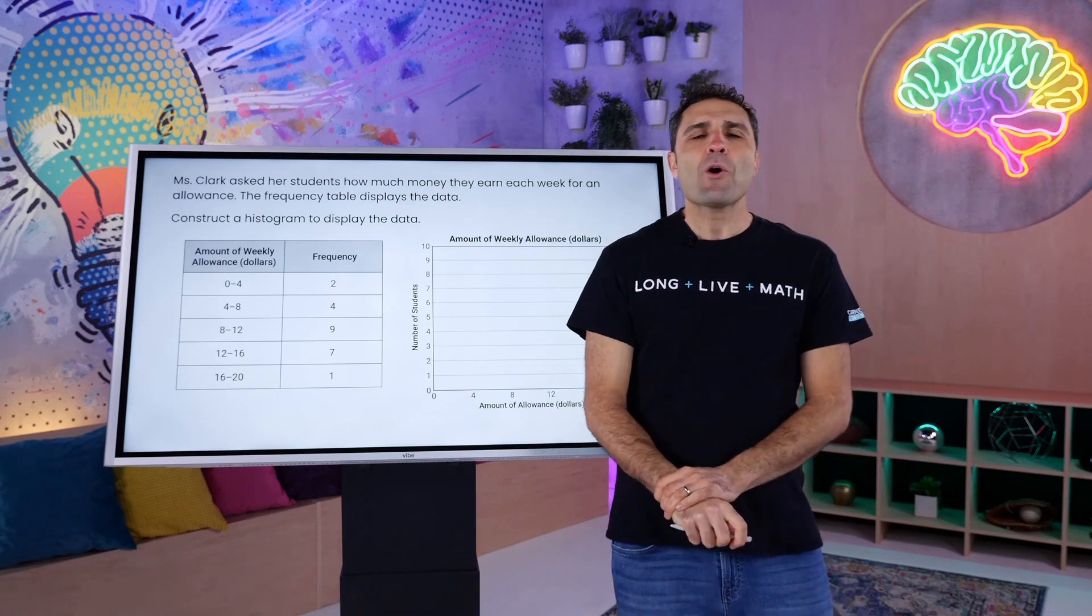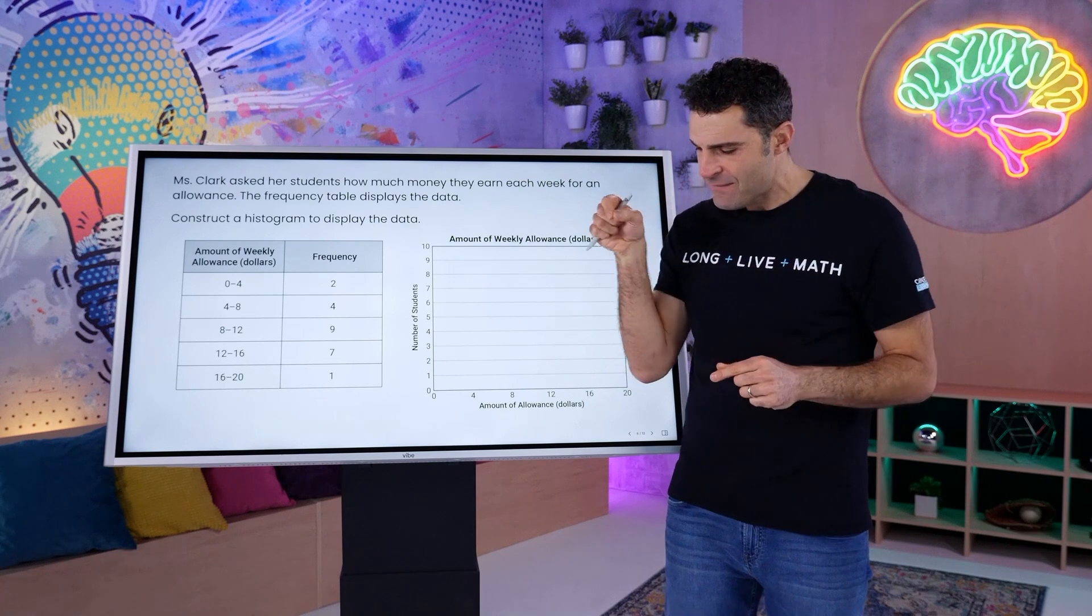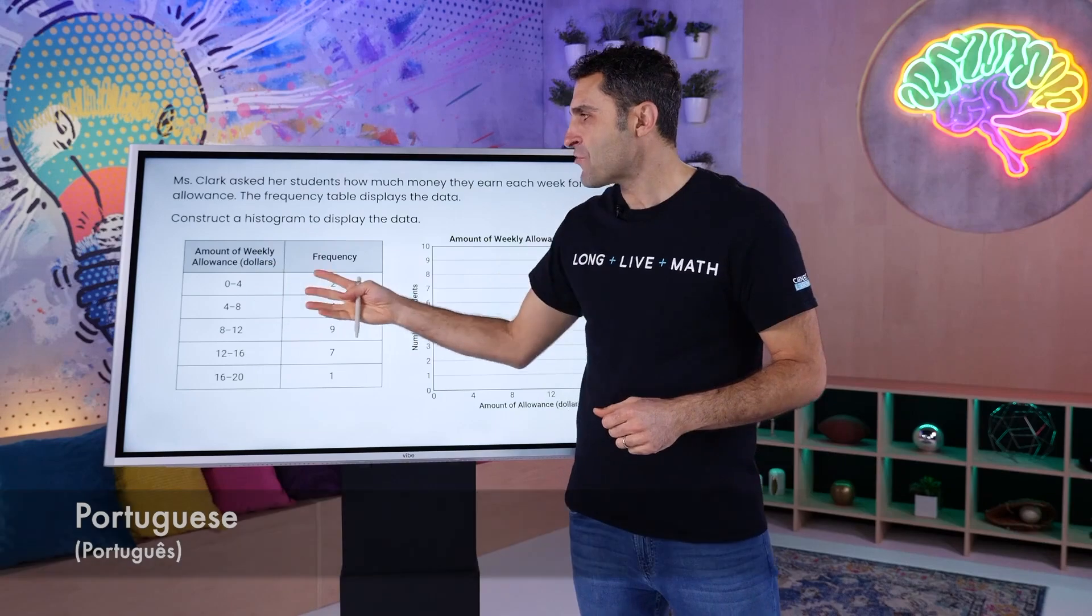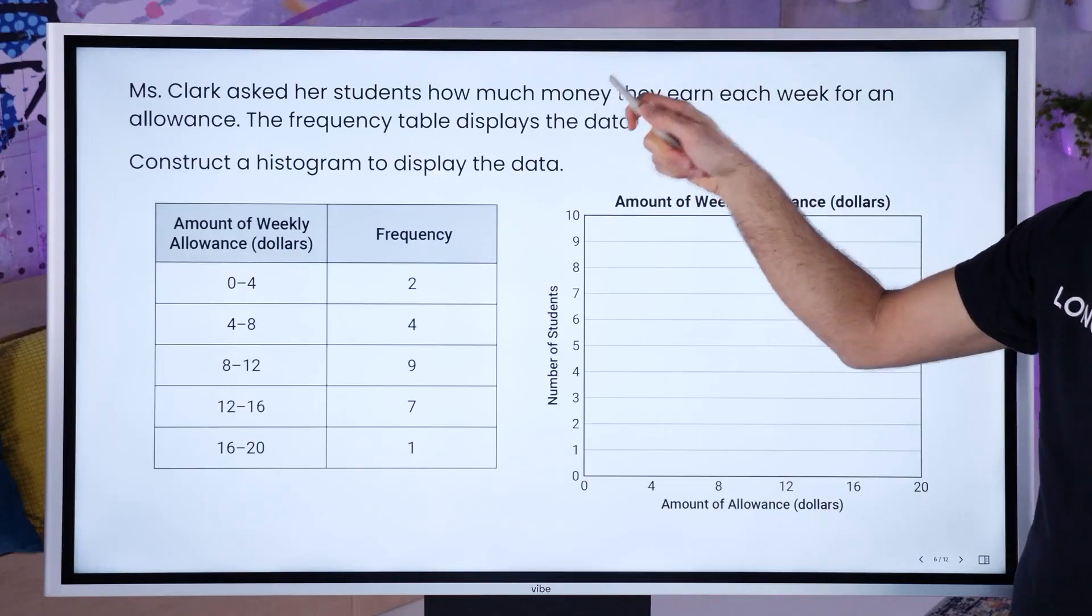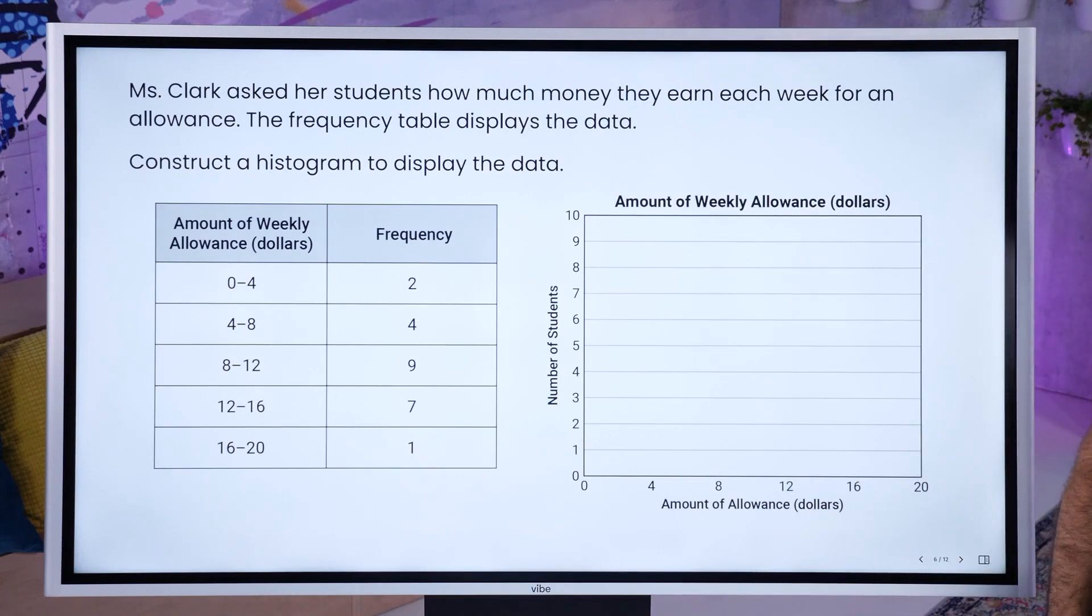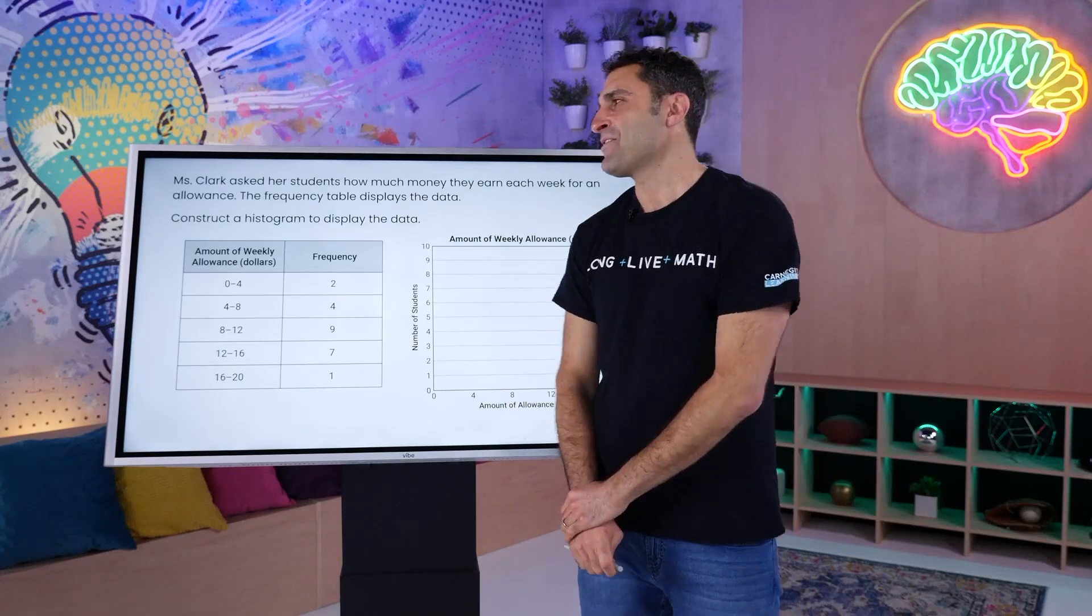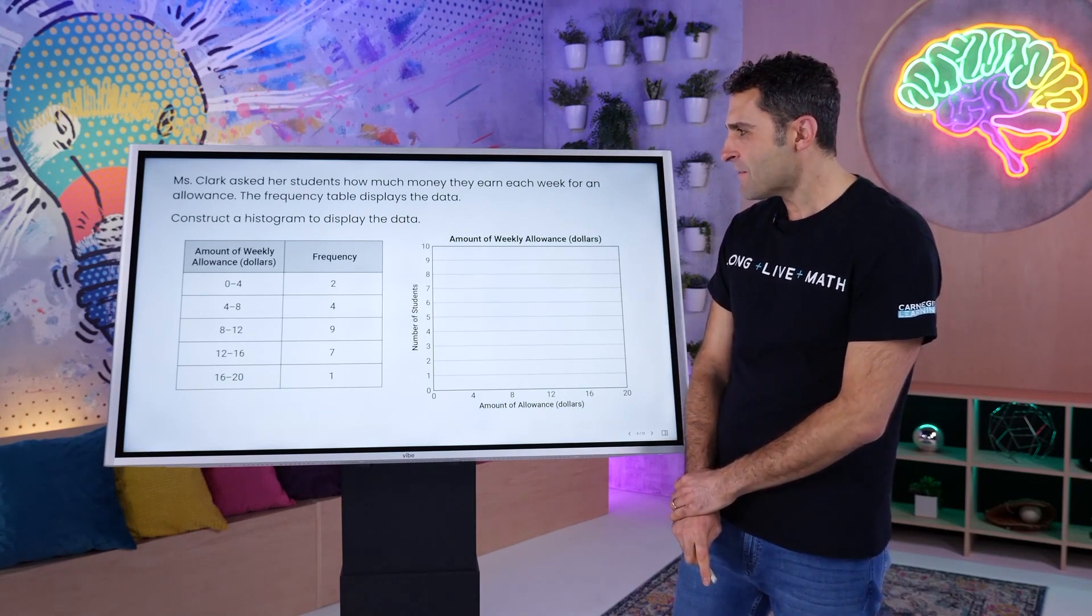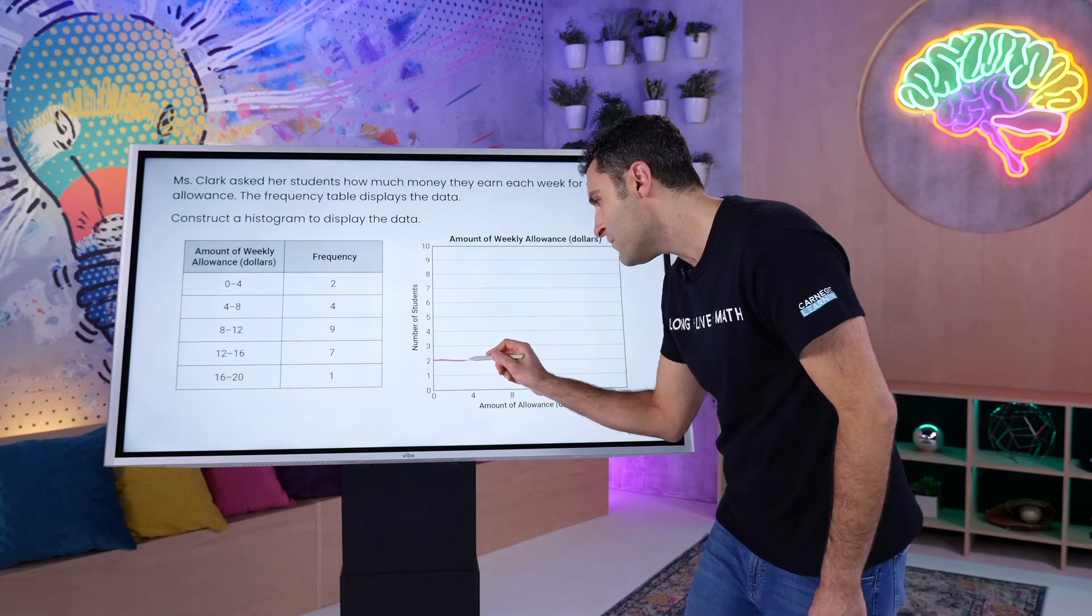Bem-vindo de volta à parte de construção de dados. Vamos ler sobre a senhora Clark, construir um histograma e falar sobre seu significado. A senhora Clark perguntou aos estudantes qual é o valor da mesada que eles recebem por semana. A tabela de frequência exibe os dados. Certo. Os professores se preocupam em construir um histograma para exibir os dados. Vamos ter uma conversa sobre isso. De 0 a 4, quantos são 2? Aqui está.